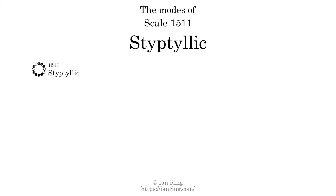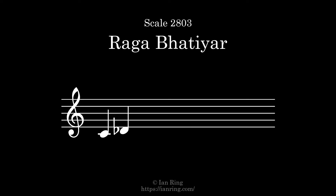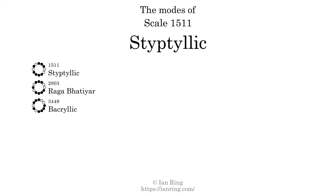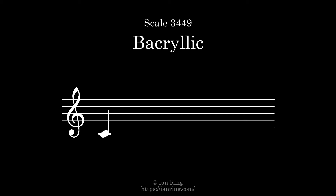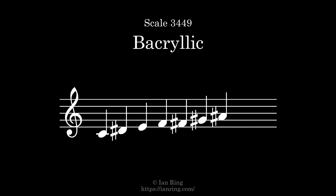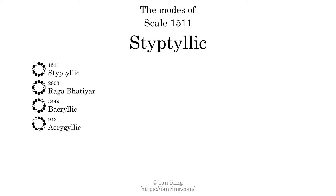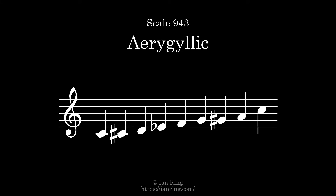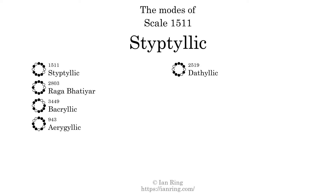This scale has eight modes. The first mode is itself. The second mode is scale 2803, also known as Raga Beta R. The third mode is scale 3449, also known as Raga Beta R. The fourth mode is scale 2519, also known as Dethylic.